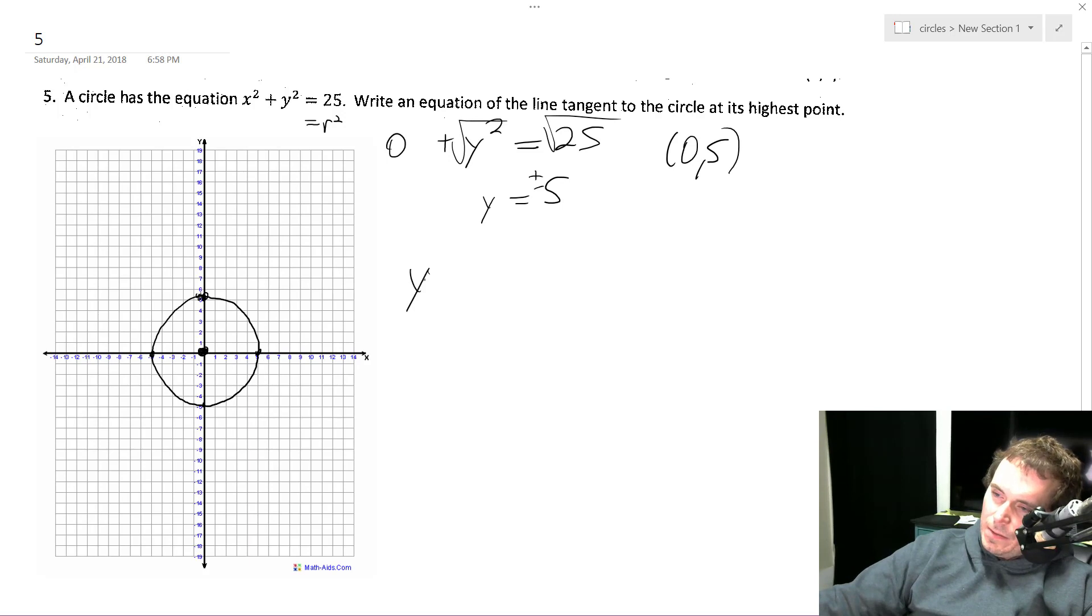So we use the point slope form. And at the top, since x is equal to 0, y equals 5, well it's got a slope of 0.